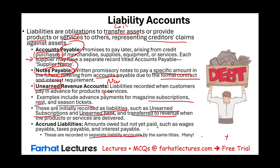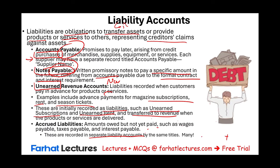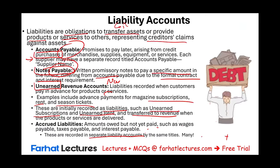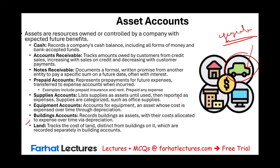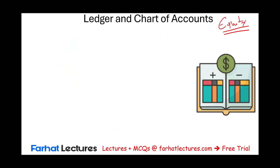Beside assets and liabilities we have equity accounts, which were covered in the prior session. The reason we are going over all these accounts is to remind you that we keep track of each one — accounts payable, notes payable, unearned revenue, accrued liabilities, land, equipment, supplies, and prepaid — through individual accounts. That is the whole purpose of reviewing them.